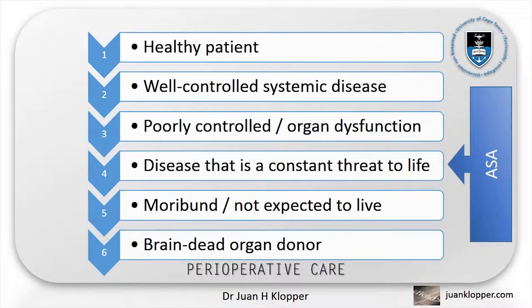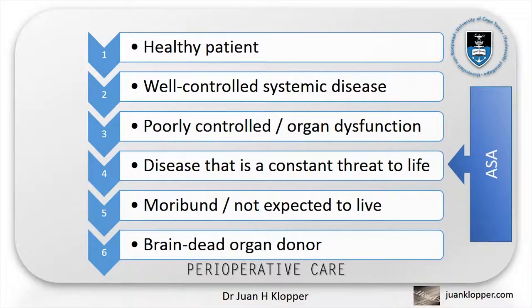The ASA classification considers all underlying disease and not simply cardiac status. The ASA refers to classes 1 through 6. An ASA class 1 patient is completely healthy except for the disorder requiring surgery. The class 2 patient has mild systemic disease that is well controlled. The class 3 patient suffers from a systemic disease that is poorly controlled or that has resulted in some form of organ dysfunction. The class 4 patient has a disease that is a constant threat to life. The class 5 patient is moribund and not expected to survive without the surgery. And finally, the class 6 patient is brain dead and needs to be considered for organ donation. This class system is important to consider in all patients going to theatre, but is not specific to the cardiac patient.